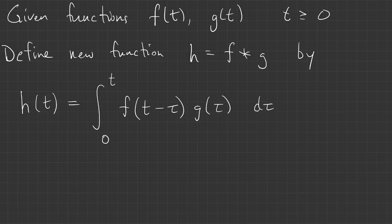Now an integral is the continuous version of a sum. And the way this integral is written, the variables, the arguments of the functions here, add up to T to get H at time T. So it's a very close analogy with the sum. And this F star G is something we call the convolution of F and G.